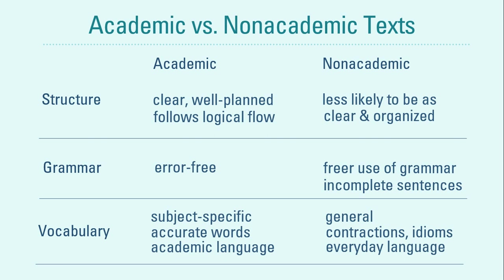The vocabulary words used in academic texts are subject-specific, accurate, and academic. A chemistry report uses words specific to chemistry; a literature research paper uses words from that discipline. These are called subject- or discipline-specific terms. Non-academic texts use words common in speech and may allow contractions such as 'isn't,' 'doesn't,' and 'couldn't,' as well as idioms for artistic effect.